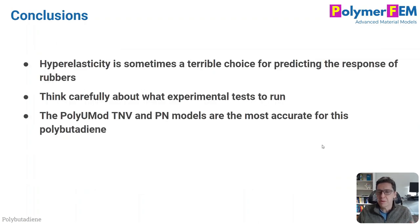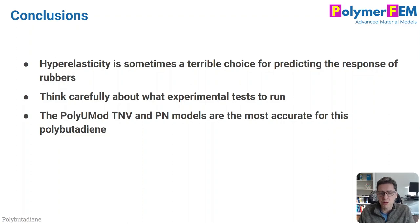Finally, conclusions. Remember: hyperelasticity can sometimes be a terrible choice for rubbers, and here's a clear example of that. Think very carefully about what experimental data you have — the type of experimental data you use will influence what material models you can calibrate, so you want to have enough data for the calibration. In this case, the PolyUMod TNV and PN models were the most accurate. If you have any questions, you can ask them below.